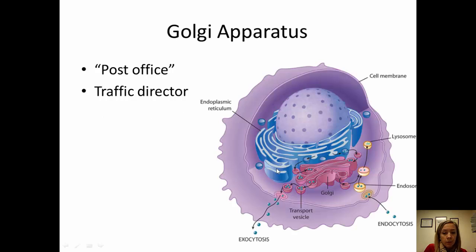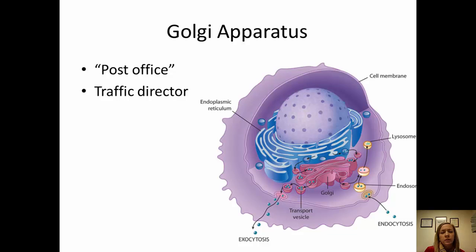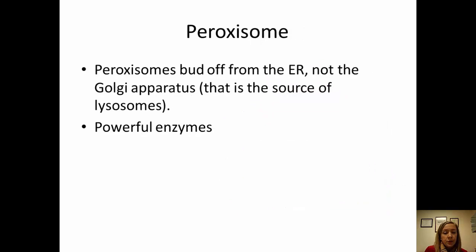The Golgi apparatus is another example of flattened membrane sacs. It's the post office — or traffic director — of the cell, modifying and sorting material that comes in. Lysosomes bud off of the Golgi apparatus. 'Lys' means to destroy or break down, so lysosomes contain enzymes that break down things like lipids or proteins. Peroxisomes have a similar function but bud off from the ER rather than the Golgi, and they also contain powerful enzymes that break things down.